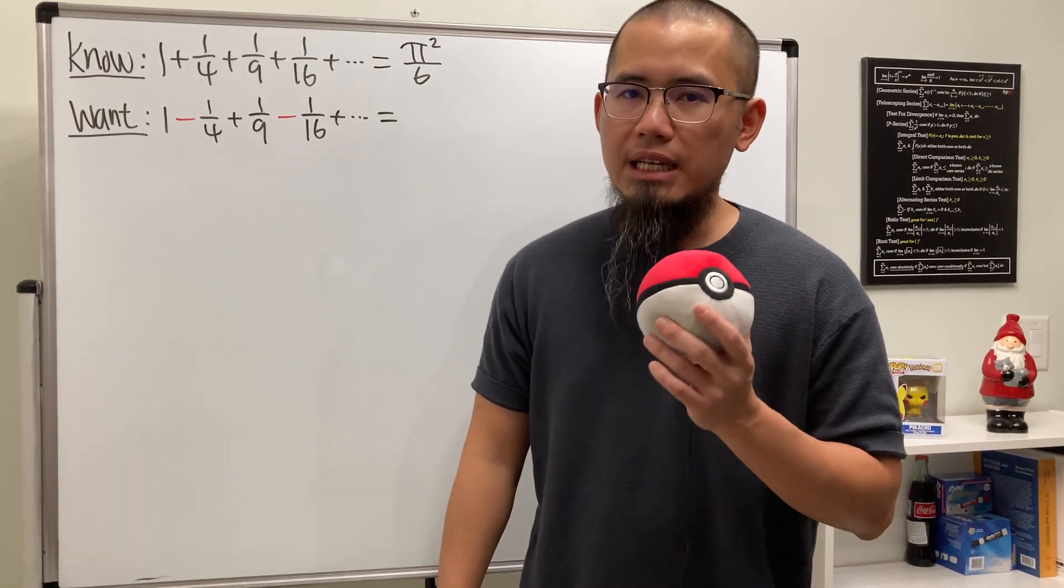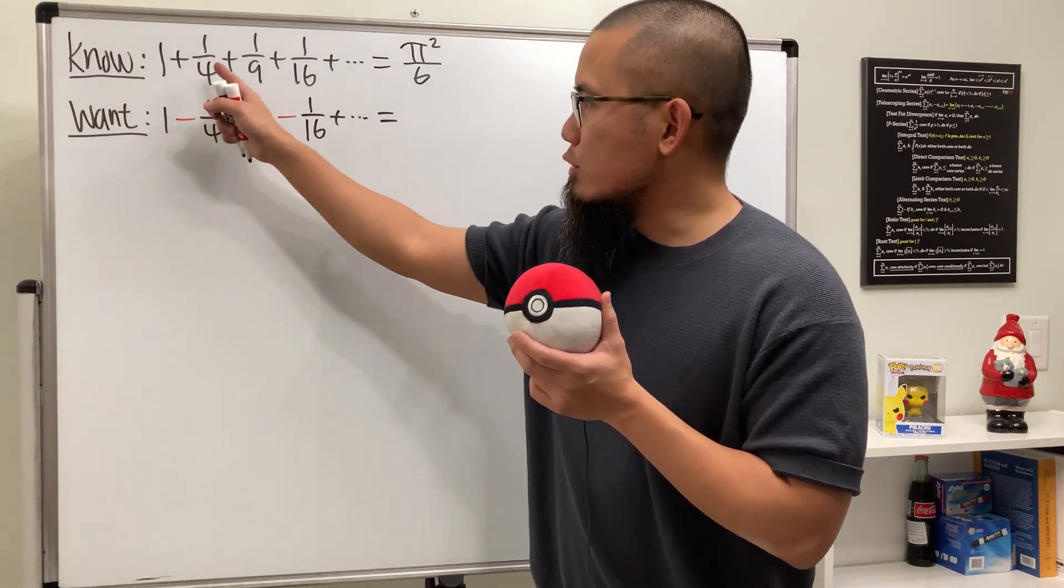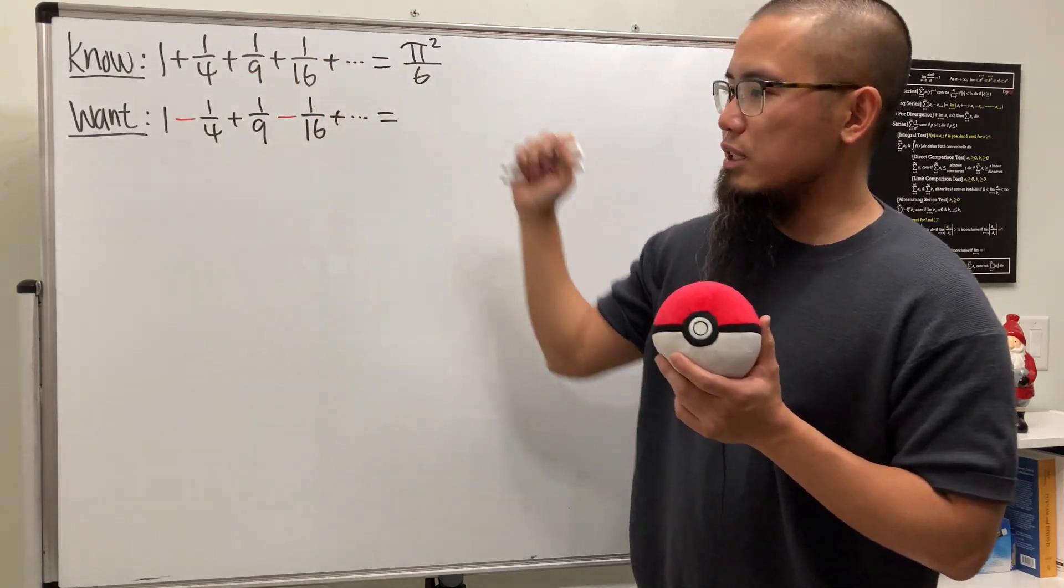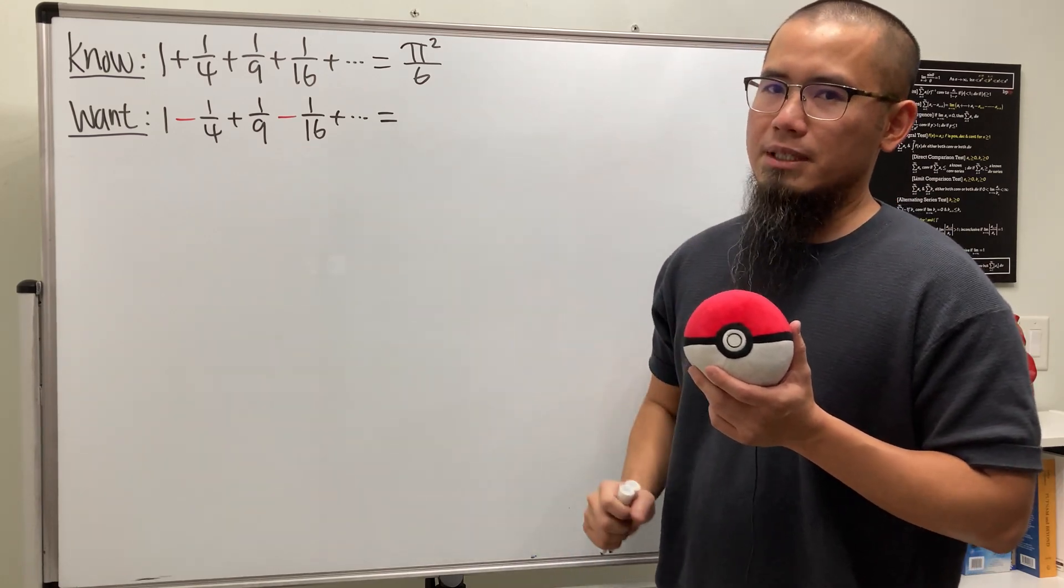Dear Calculus 2 students, let's do another alternating series question. This time we are looking at the famous sum, 1 plus 1 over 4 plus 1 over 9 plus 1 over 16 and so on. This right here is just a series of 1 over n squared, which converges to pi squared over 6. It's a famous result.